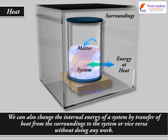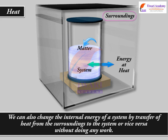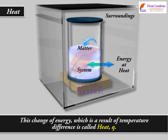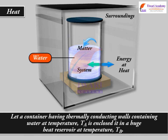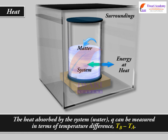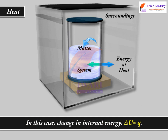Heat. We can also change the internal energy of a system by transfer of heat from the surroundings to the system or vice versa, without doing any work. This change of energy, which is a result of temperature difference, is called heat Q. For a container with thermally conducting walls containing water at temperature T_A enclosed in a huge heat reservoir at temperature T_B, the heat absorbed by the system Q can be measured in terms of temperature difference T_B minus T_A. In this case, change in internal energy delta U is equal to Q.